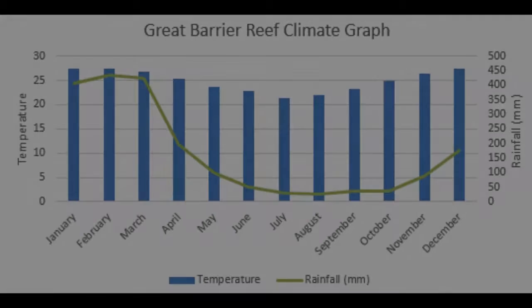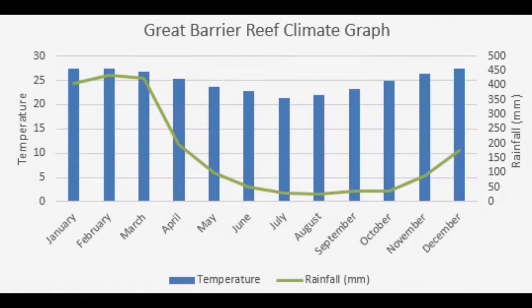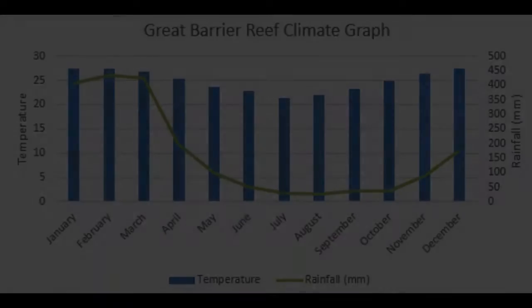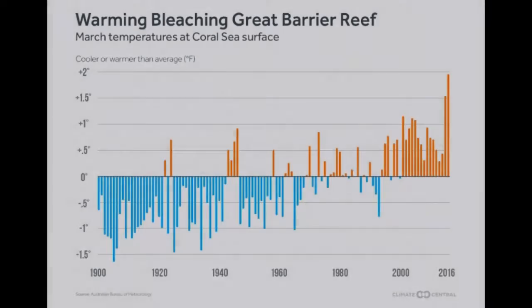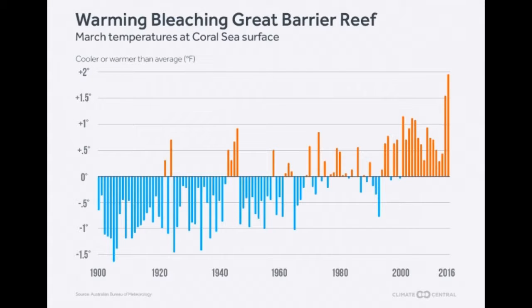Optimal temperatures for many corals are between 73 and 84 degrees Fahrenheit. Some can tolerate temperatures as high as 104 degrees Fahrenheit for short periods. Most reef-building corals require water with high salinity between 32 and 42 parts per thousand.